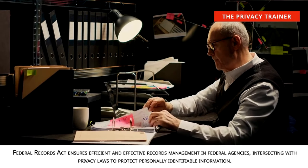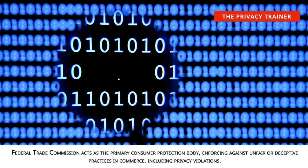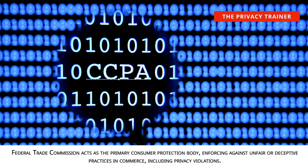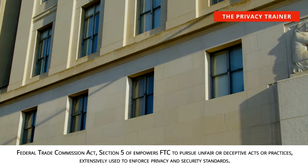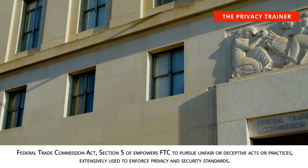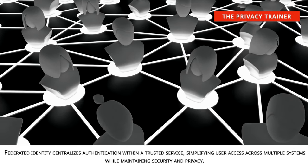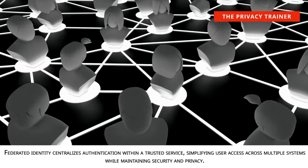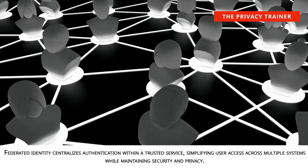Federal Records Act. Ensures efficient and effective records management in federal agencies, intersecting with privacy laws to protect personally identifiable information. Federal Trade Commission. Acts as the primary consumer protection body, enforcing against unfair or deceptive practices in commerce, including privacy violations. Federal Trade Commission Act, Section 5. Empowers FTC to pursue unfair or deceptive acts or practices, extensively used to enforce privacy and security standards. Federated Identity. Centralizes authentication within a trusted service, simplifying user access across multiple systems while maintaining security and privacy.